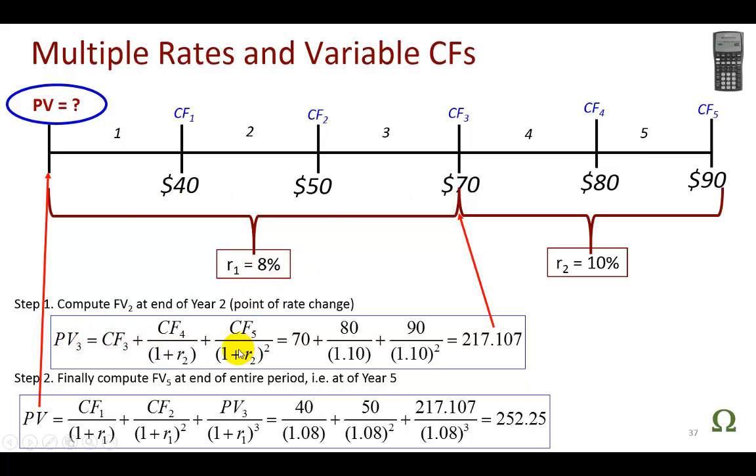So that's it here, manual calculation. CF3 is this guy right here, 70. CF4 is 80, and this is being discounted over one period. And CF5 is 90. As you can see, it's being discounted over two periods, which is from here to here.